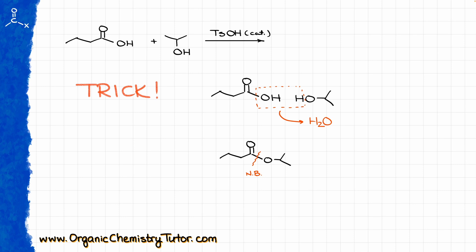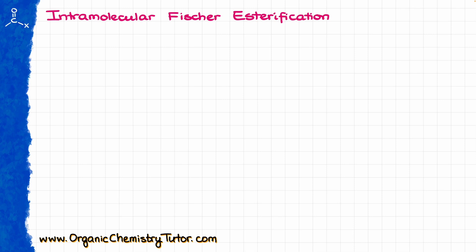Since we love cyclic compounds and rings in organic chemistry, I couldn't omit the intramolecular Fischer esterification. Whenever we have an intramolecular reaction, the reaction happens within the molecule itself and is most likely a cyclization. For instance, if I have a molecule with a carboxylic acid functional group and an alcohol within the same molecule, these two functional groups can react with each other making a cycle — in this case forming a bond between the oxygen and a carbon to give a 6-membered ring.